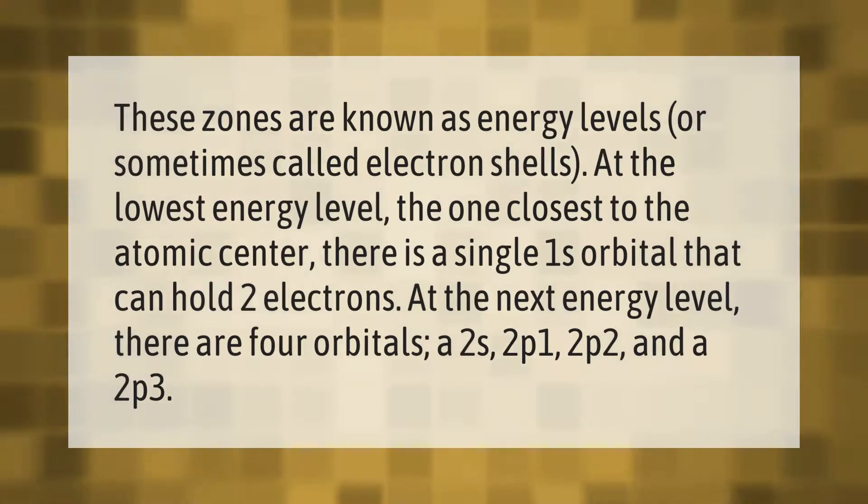These zones are known as energy levels, or sometimes called electron shells. At the lowest energy level, the one closest to the atomic center, there is a single 1s orbital that can hold two electrons. At the next energy level, there are four orbitals: a 2s, 2p1, 2p2, and a 2p3.